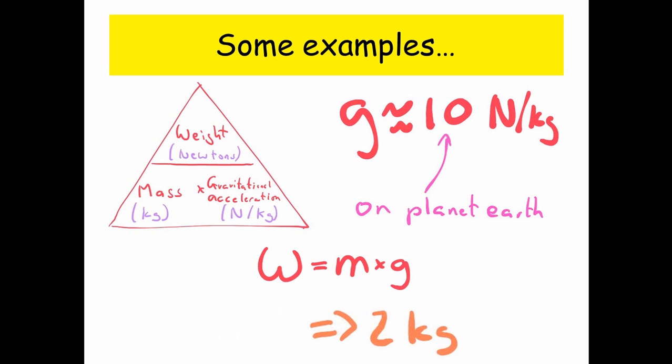So what weight would be equivalent of 2 kilograms? Well, 2 kilograms is our mass, so 2 times by 10, that's going to give us 20 newtons.